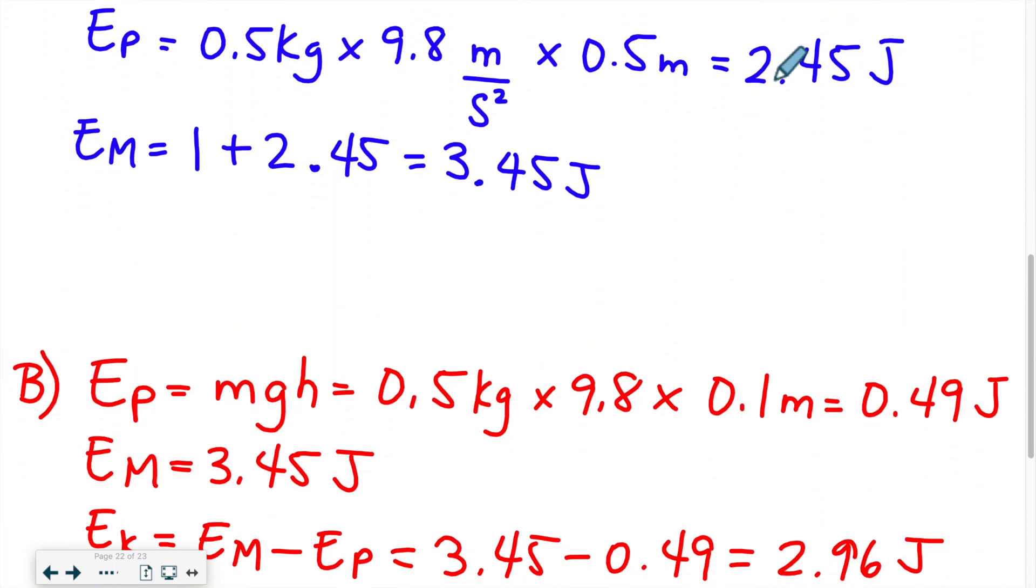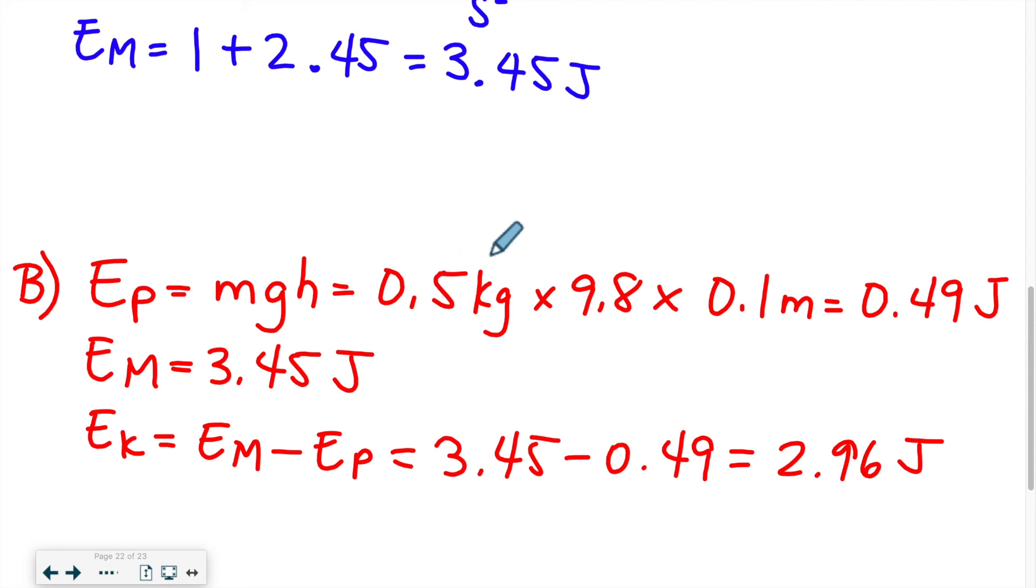So now we're going to look at the red section. We have the mass which is 0.5, we have gravity which is 9.8, and we were told that the height was 0.1 meters. So we calculate EP, which is 0.49 joules. We've already calculated the mechanical energy for point A, and we know that it's constant. So EM remains 3.45 joules. Once we have EM and EP, we can now do EM minus EP and find EK, which is what I have over here. EK is equal to the mechanical energy minus the potential energy, and that gives me 2.96 joules. So now I have all three values for position B in the problem.